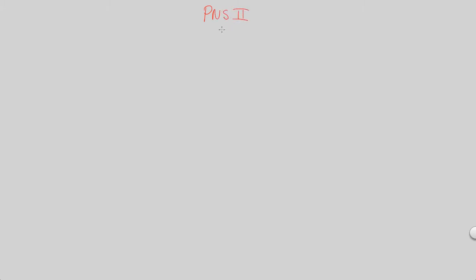As we continue talking about the peripheral nervous system, we'll entitle this next flowchart PNS2. What we're going to focus on in this flowchart is the efferent motor system. We talked about one part of the efferent motor system in some detail in the previous video — the motor system side of this part of the peripheral nervous system — and we said we'd get back to the other part: the autonomic nervous system.